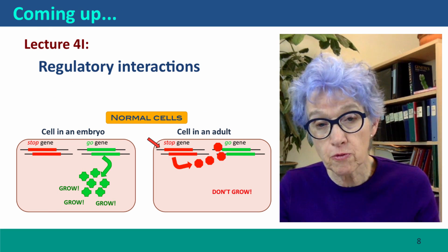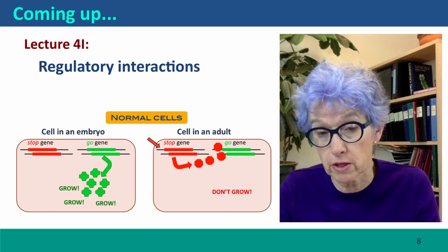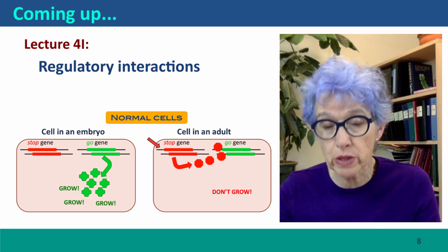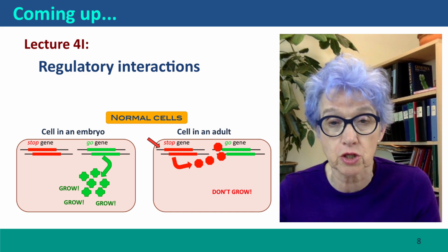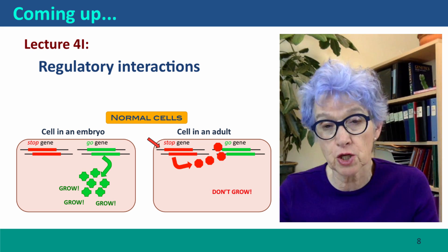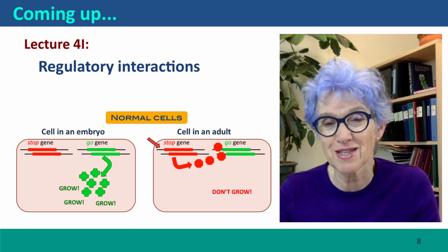Coming up next, we're going to move on to thinking about regulatory interactions. These are more complex to think about, but they're extremely important in all biological situations, and they're going to prepare us for the next step, which is to think about the genetics of cancer. I hope to see you there.